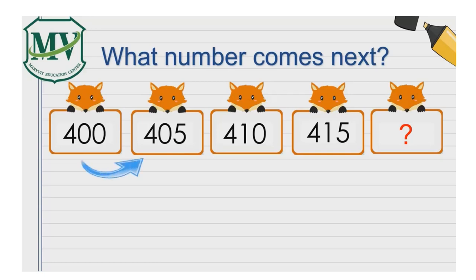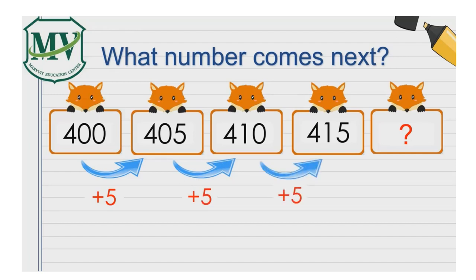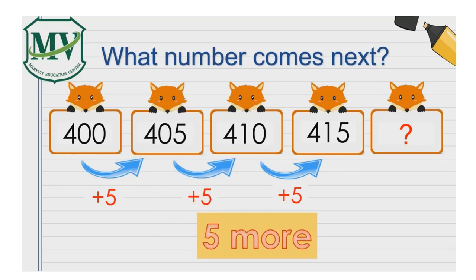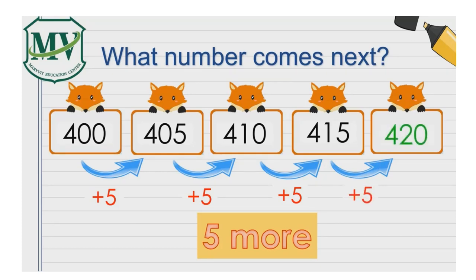Compare 400 to the next number, 405. 405 has five more than 400. 410 has five more than 405. 415 has five more than 410. The number pattern rule is five more. What number has five more than 415? 415 added by five is 420. 420 has five more than 415.